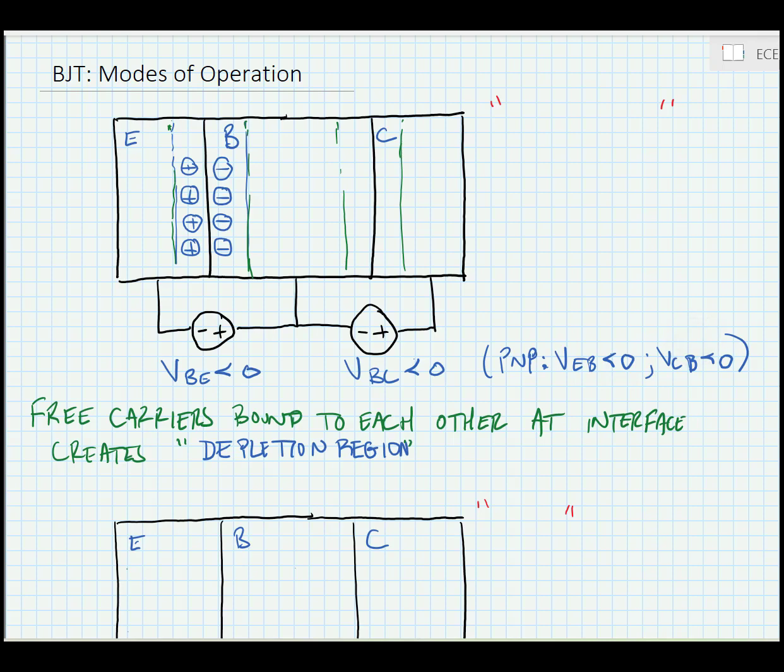The same thing happens over at the base collector side. The charge carriers diffuse across and quickly get bound up by any of the free carriers in the other region. Because of this, no current can flow, and so they call this region cutoff.